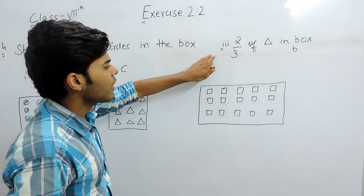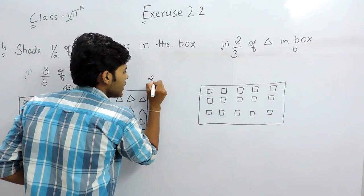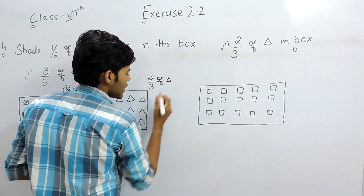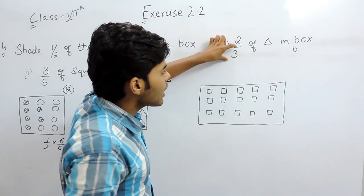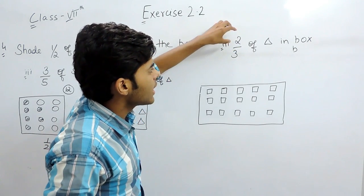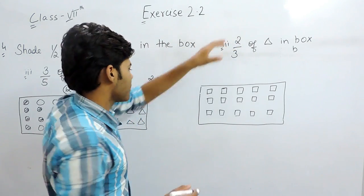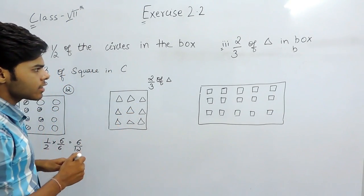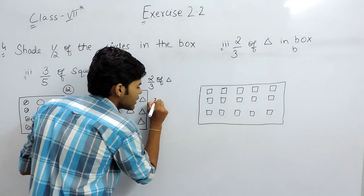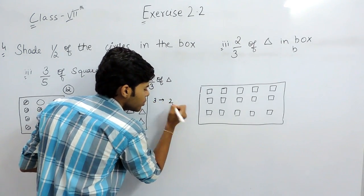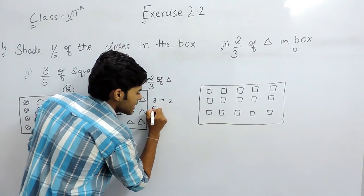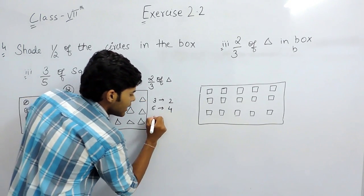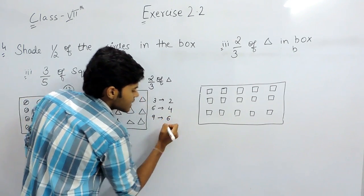In part B we have to shade 2 by 3 of the total triangles. This means that if there are 3 triangles then we shade any 2 of them. But there are total 9 triangles. If there were 3 triangles we shade 2; if there are 6 we shade 4; and if there are 9 we shade 6 triangles.